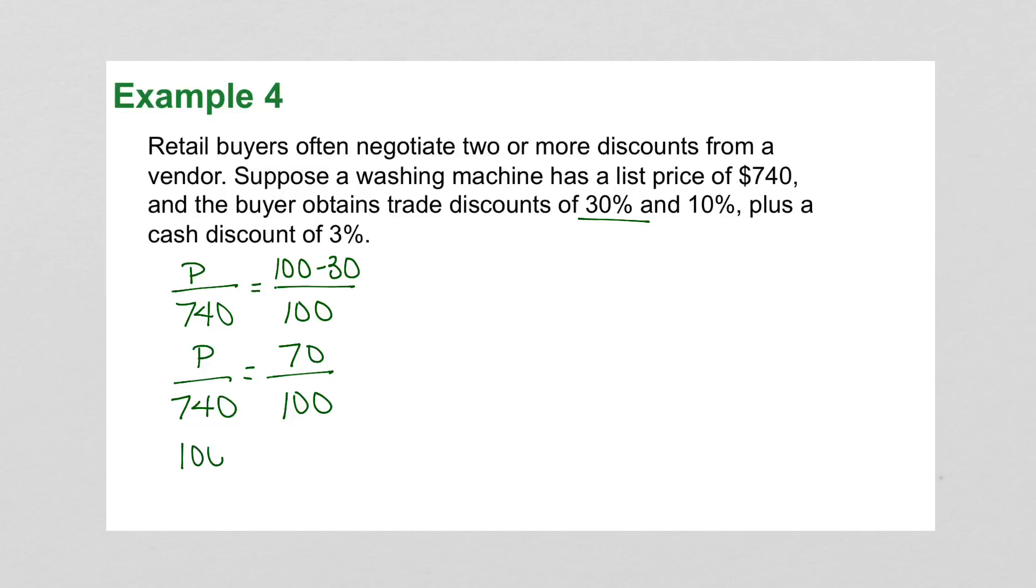The first discount that we're going to take is the 30% off. So we're going to say 100 minus 30 up here. That will give us $70 on top. Cross multiply, and the new price is now $518.